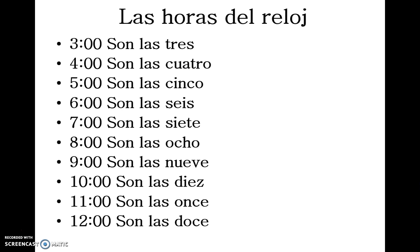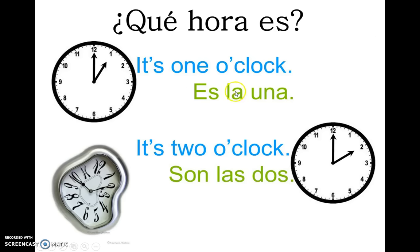Las horas del reloj son: son las tres, son las cuatro, son las cinco, son las seis, son las siete, son las ocho, son las nueve, son las diez, son las once, son las doce. The only one that's different is, again, es la una — because that's singular, just one hour.